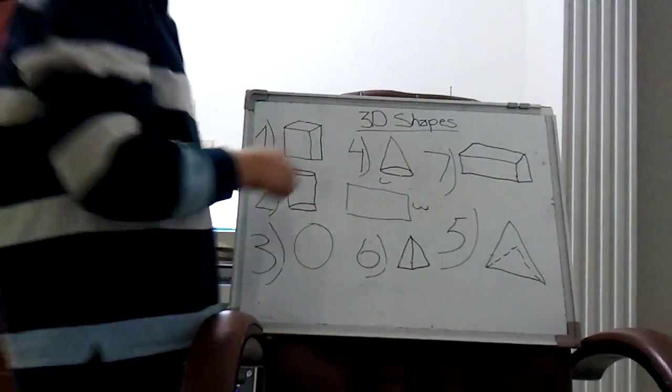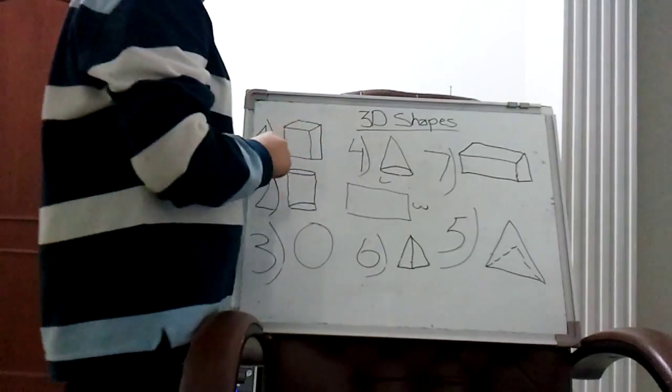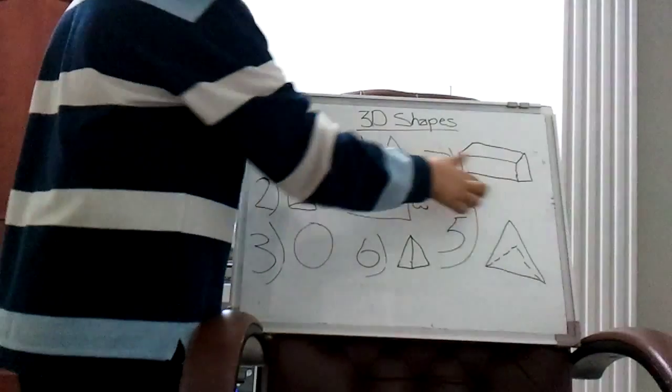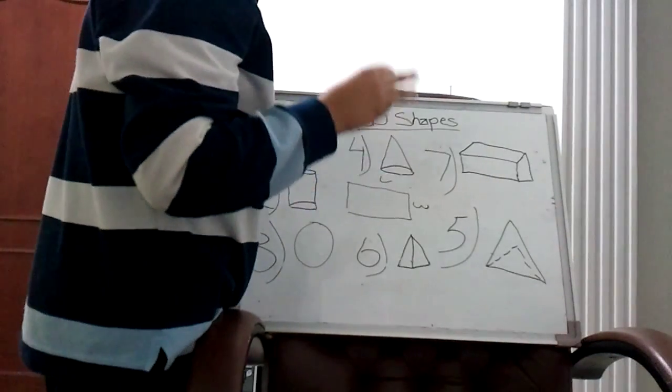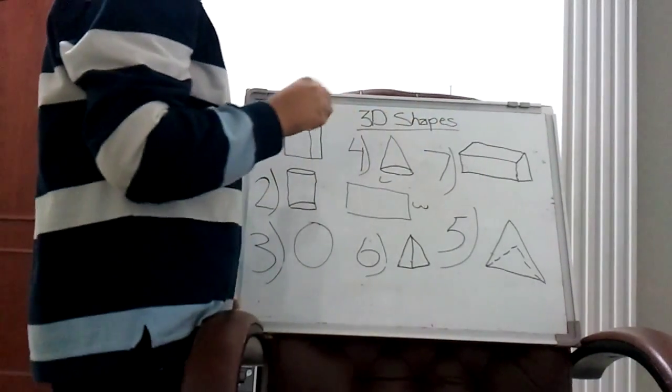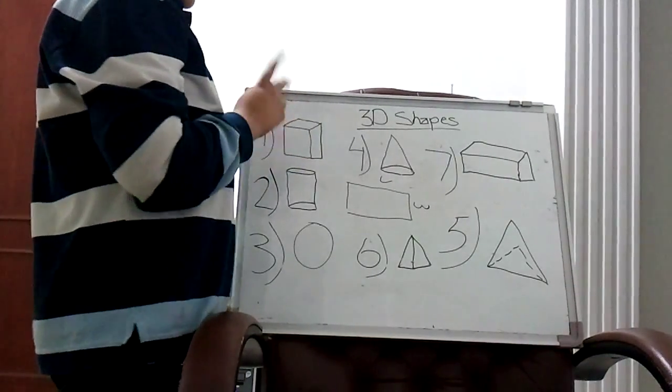Hey guys, here is another lesson for you on 3D shapes. We have seven examples, and I will explain them. 3D shapes have three features: vertices, edges, and faces. Let me tell you all about them.